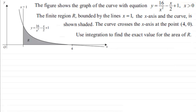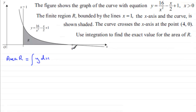Okay, so to work out the area — let's just write that down — the area of that region R is going to equal the integral of your graph, which is y in this case, with respect to x, going between the limits x equals 1 to x equals 4. So to integrate this, I've got to integrate between 1 and 4 — that's my x values — I've got to integrate 16 over x squared minus x over 2 plus 1.